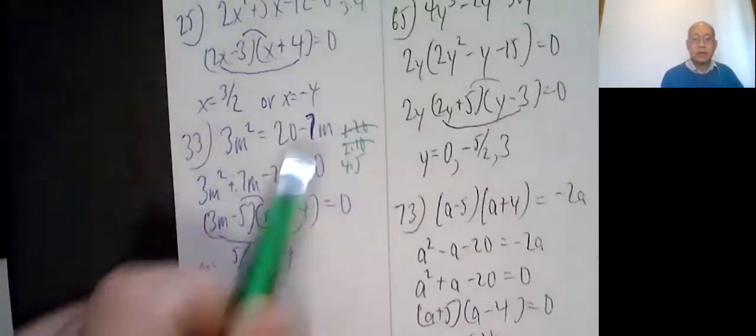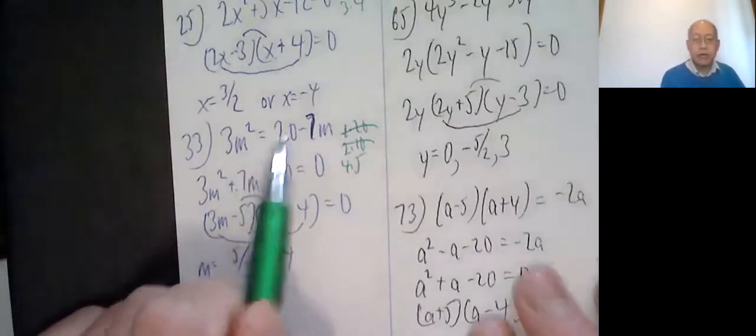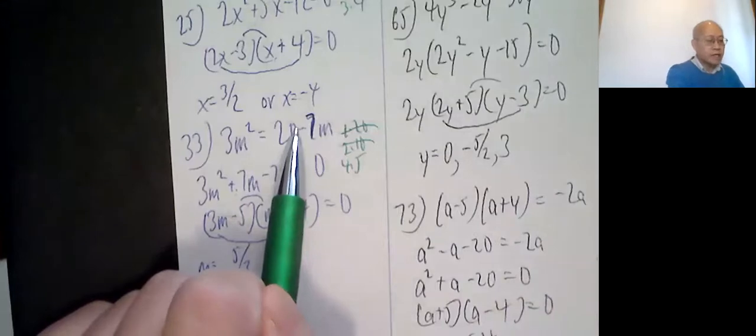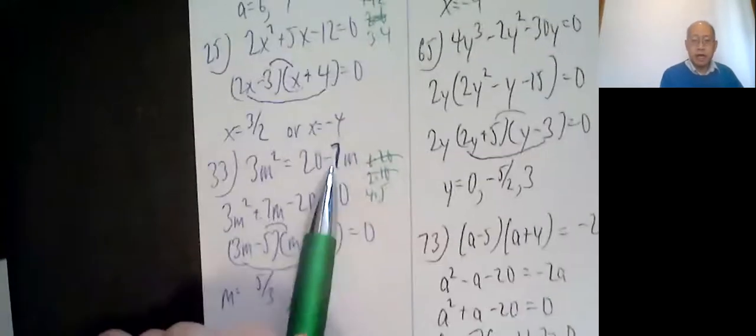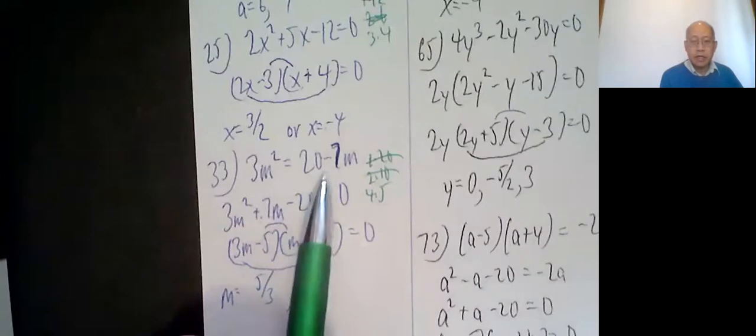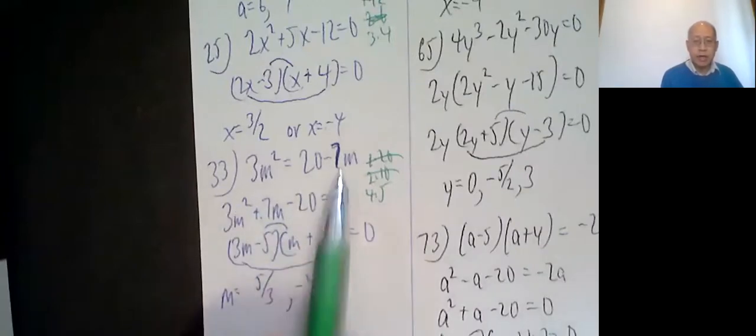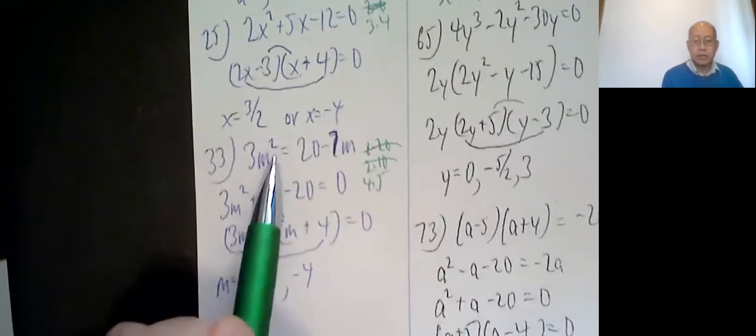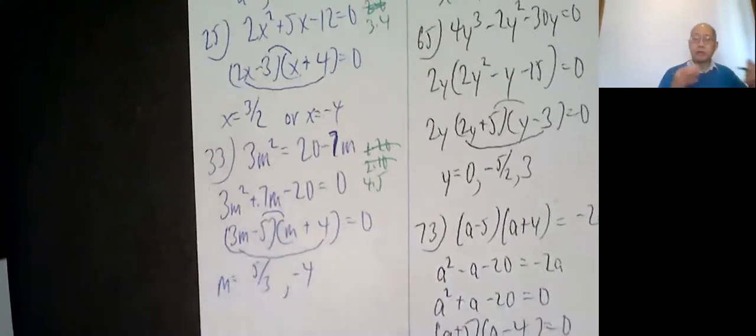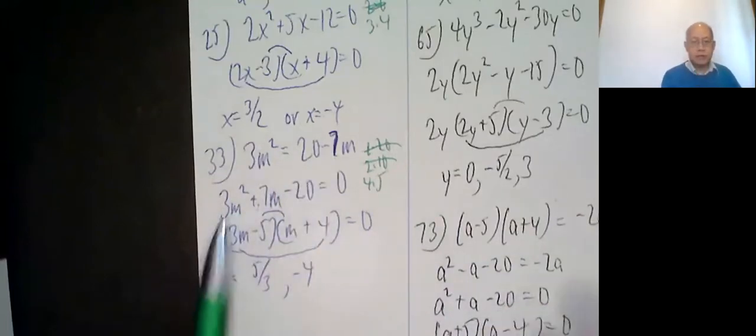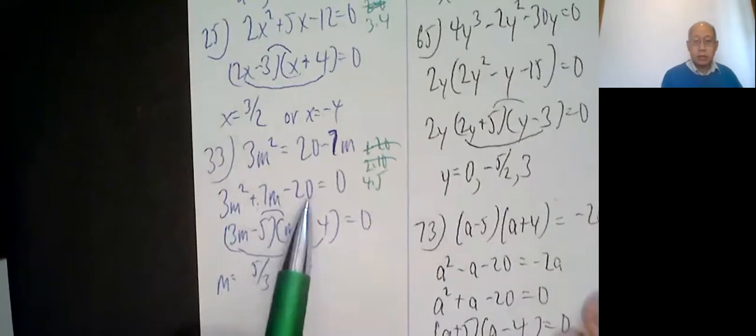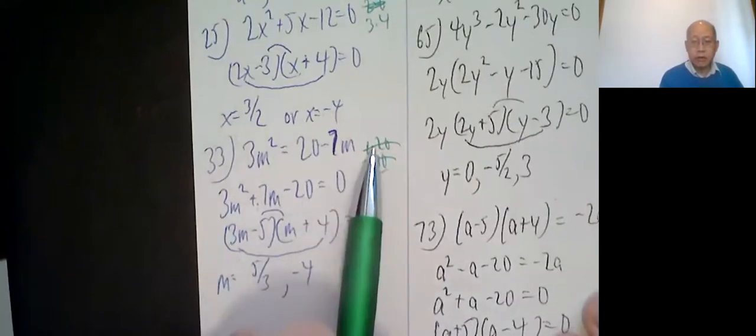This one: 3m squared equals 20 minus 7m. Now the right-hand side is always supposed to be zero, so it's not zero, you force it to be a zero. That means I'm going to add 7m to both sides and subtract 20. So I subtracted 20, added 7m. You'll notice as the semester goes on, I show you fewer and fewer steps. I try to push you to do more in your head. 3m squared is 3m and m.